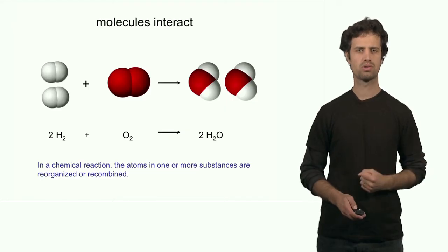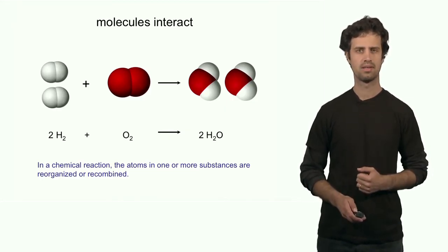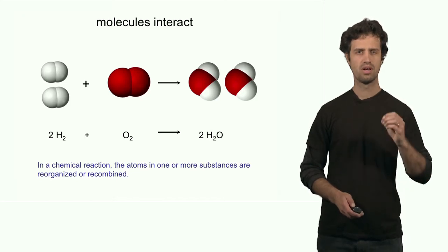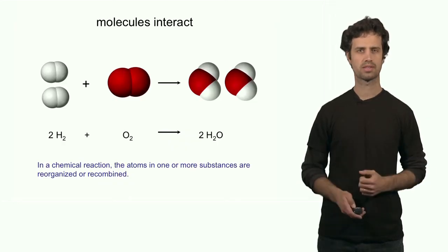We see three molecules on the left forming two molecules on the right. In this process, the atoms of the reactants are rearranged to form new compounds, which we call the products.